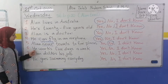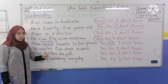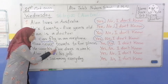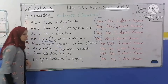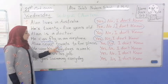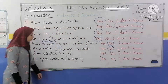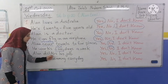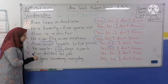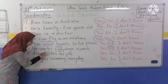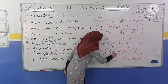Number 6: He works 5 days a week? No. The correct answer is he works 6 days a week. Circle around No. Number 7: Alan dislikes his job? No. He likes his job, so this is wrong. Alan likes his job.